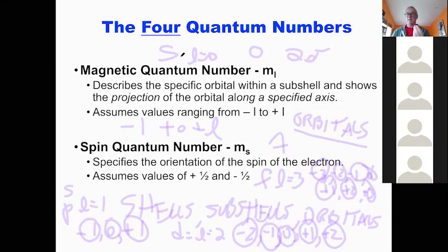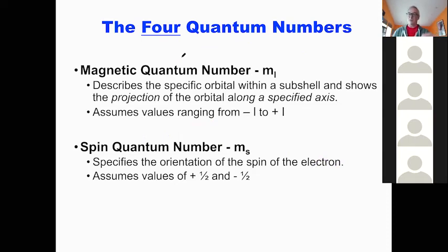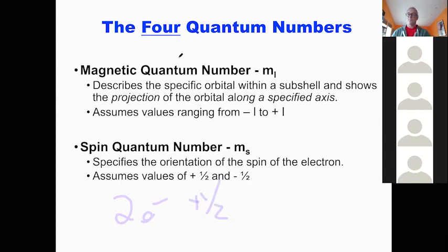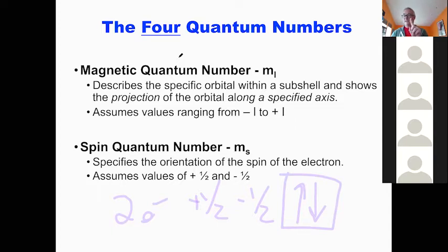Those are the magnetic quantum numbers — M sub L tells you which orbital the electron is in. Finally, the fourth quantum number is the simplest: the spin number. There are only two values because once you're inside an orbital, only two electrons can be there. If you're the first one in, your spin is plus one half; if you're the second one in, your spin is minus one half. That's why we see arrows pointing up and down when filling orbitals.